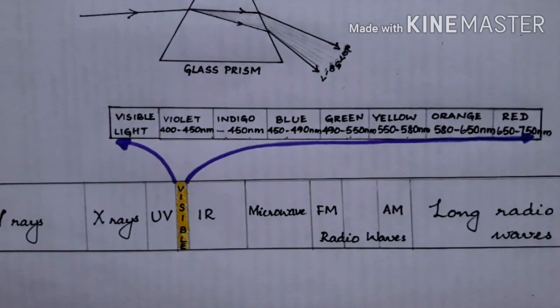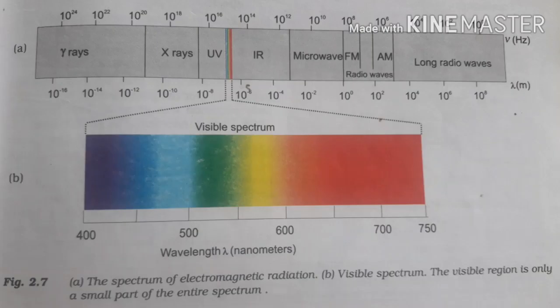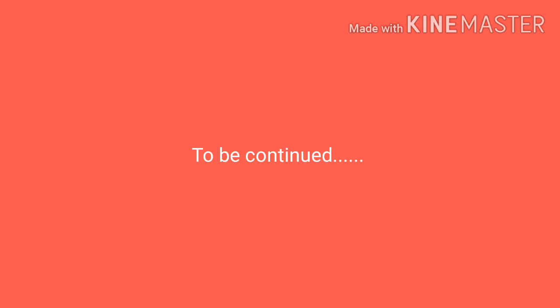So spectrum means a regular array of radiations arranged in the increasing order of wavelength or decreasing order of frequency. What you see now is the spectrum of white light.